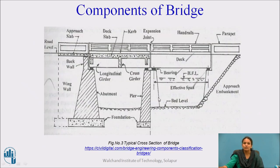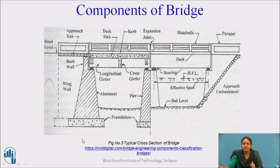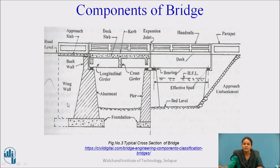These are the common elements of the bridge structure. The bridge is divided into two parts: substructure and superstructure. The substructure consists of foundation, piers and abutment. The superstructure consists of deck slab, girder, truss, etc. Similar to a building, which is also divided into substructure — the foundation below ground level — and superstructure, which is the portion of the building above ground level.